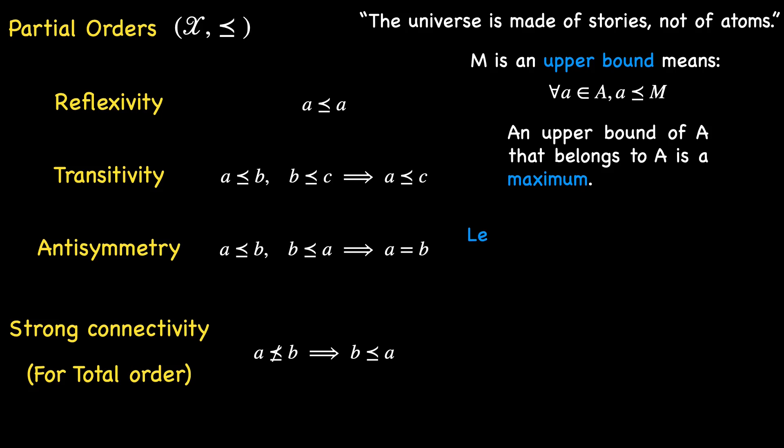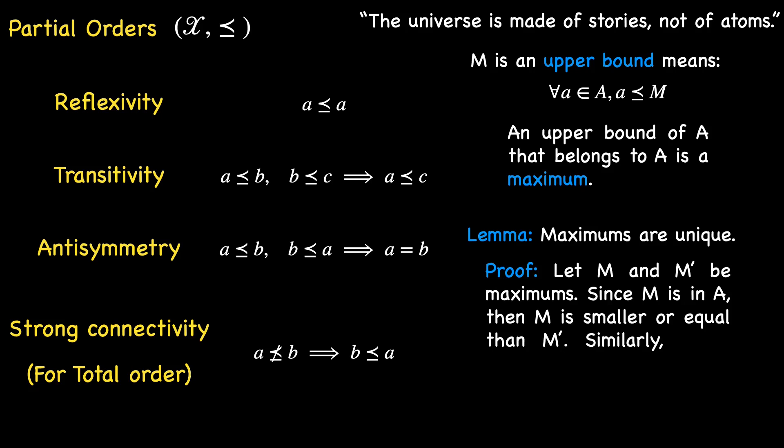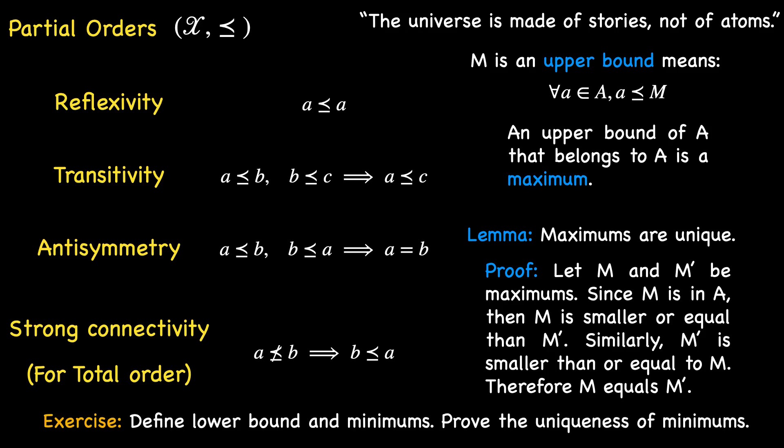Proving the uniqueness of maximums from the axioms is straightforward. Assume two maximums M and M'. As M is an element of A, it follows that M is greater than or equal to M'. Similarly, since M' is an element of A, we conclude that M' is greater than or equal to M. Combining these results, we deduce that M equals M'.